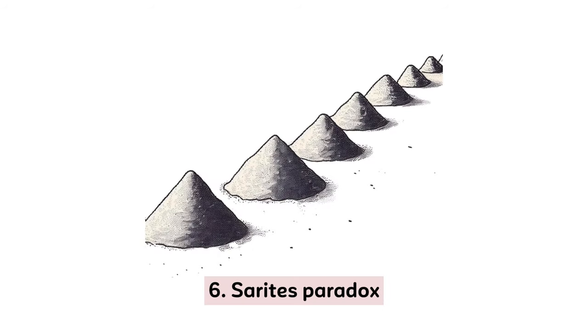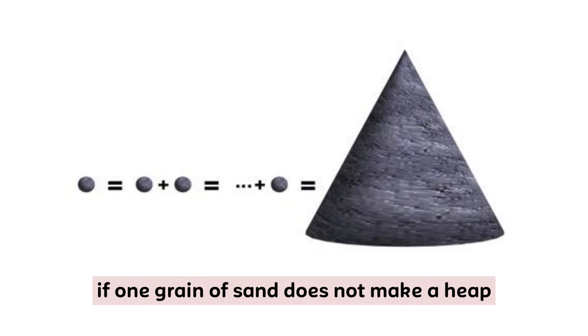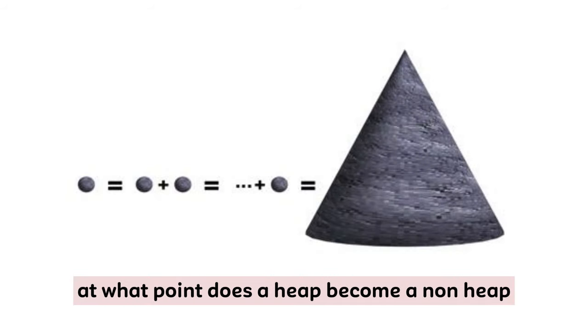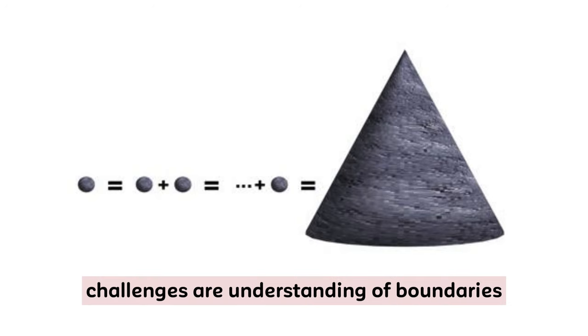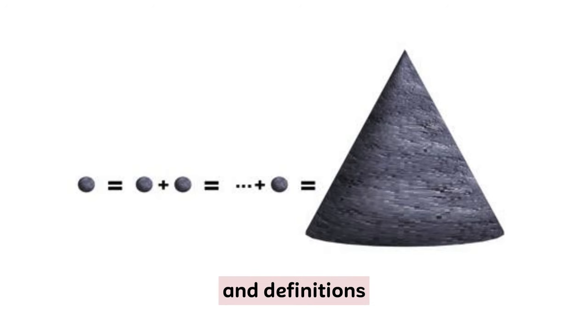6. Sorites Paradox. If one grain of sand does not make a heap, at what point does a heap become a non-heap? This paradox challenges our understanding of boundaries and definitions.